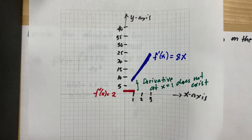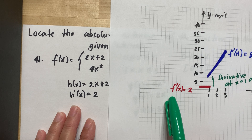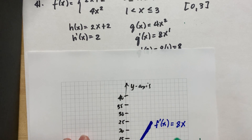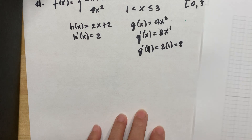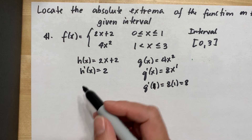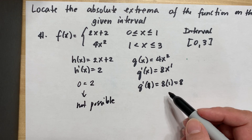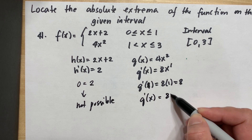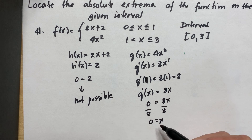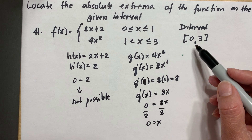But still, you will have a maximum and a minimum. The graph of the derivative of the first function, h prime, is 2 — a constant — so equating it to 0 is not possible. For the second function, equate 8x to 0 and divide by 8, giving x equal to 0. This critical number x equals 0 is the same as our left endpoint of 0.